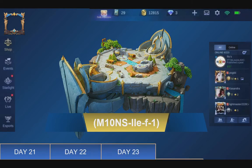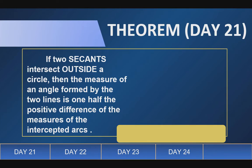Day 21 theorem, or for day 21, today's theorem is if two secants intersect outside a circle then the measure of an angle formed by two lines is one half the positive difference of the measures of the intercepted arcs.